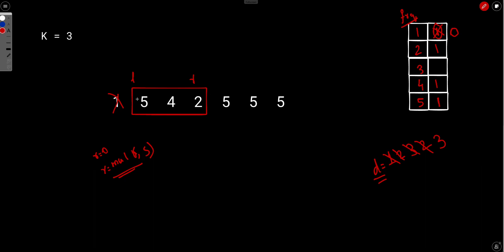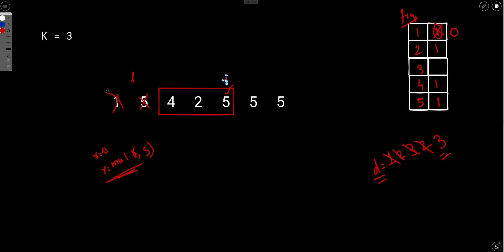We check again whether distinct equals 3 — yes it does. So we consider this subarray as well as a valid subarray and do the max operation. After this, we again move the window: we remove 5 and add another 5, so we are essentially not changing anything. The result remains the same, and this subarray is also valid.